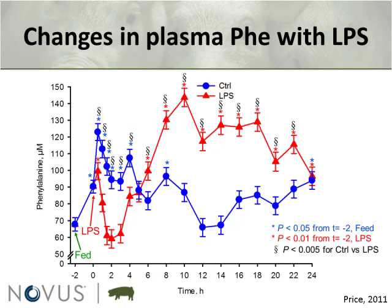Focusing on the first five hours post-LPS treatment, we calculated the area under the curve for LPS and control animals. The animals treated with LPS have a 45% reduction in the area under the curve of phenylalanine — the reduction in circulating phenylalanine levels is actually quite dramatic.